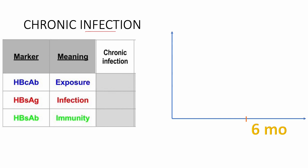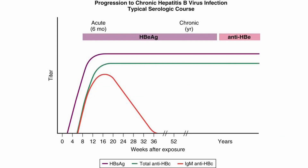In chronic infection, the surface antigen is present because the person is still infected. No immunity has developed, so the surface antibody is negative. Since the person has been exposed, they have core antibody. The key difference between chronic and acute infection is that in chronic infection the hepatitis B surface antigen persists for more than six months, while in acute infection it resolves in less than six months. I hope this video helped — let me know in the comments!